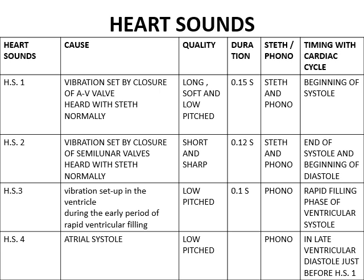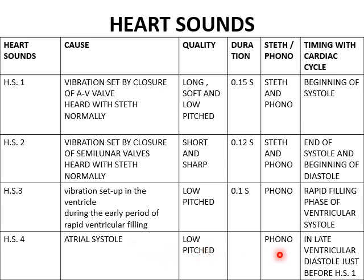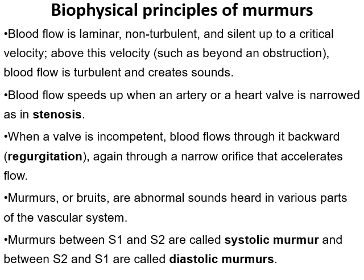The first heart sound is produced by closure of AV valves — it is long, soft, and low-pitched, with a duration of 0.15 seconds, and marks the beginning of systole. The second heart sound is generated by closure of semilunar valves — it is short and sharp, marking the end of systole and beginning of diastole. The third heart sound is produced by the rapid filling phase of the ventricles and is very low-pitched, heard only with a phonocardiogram. The fourth heart sound is generated when the atria contract, is low-pitched, and occurs in late ventricular diastole just before the first heart sound.